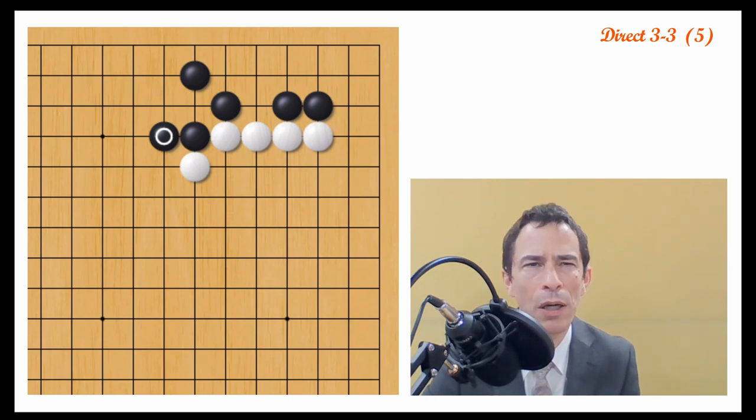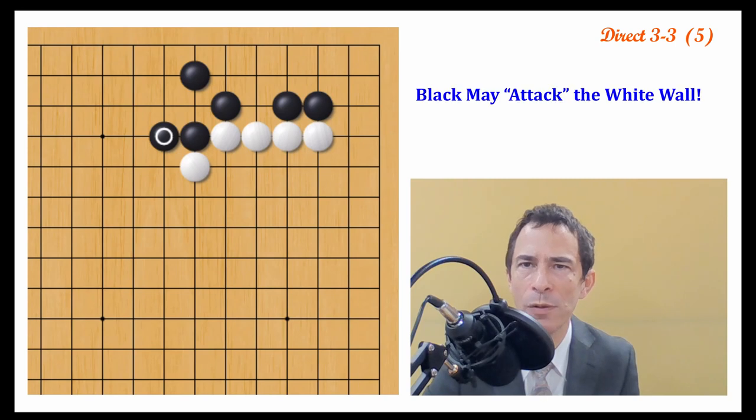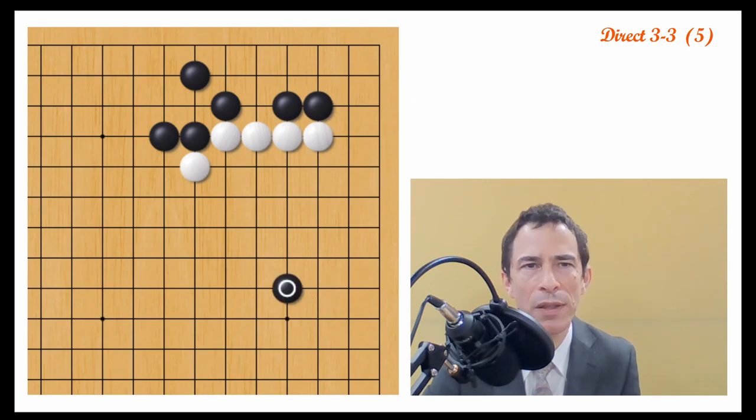And it would also be setting up some kind of an attack against white. For instance, if white continues to play away, then black would later on be able to pincer white at some point here and have an attack on white on the upper side.